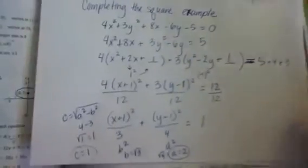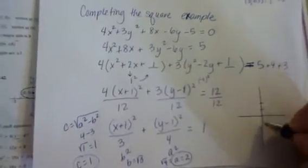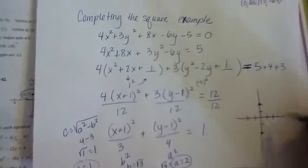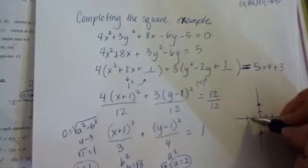So to graph this problem, we would go to the y direction. And we would go square root of 3 in the x direction, which is between 1 and 2. Square root of 3 is like, what, 1.7, I think?